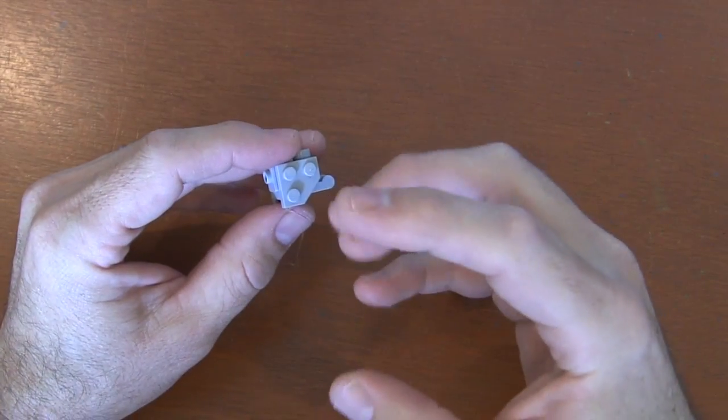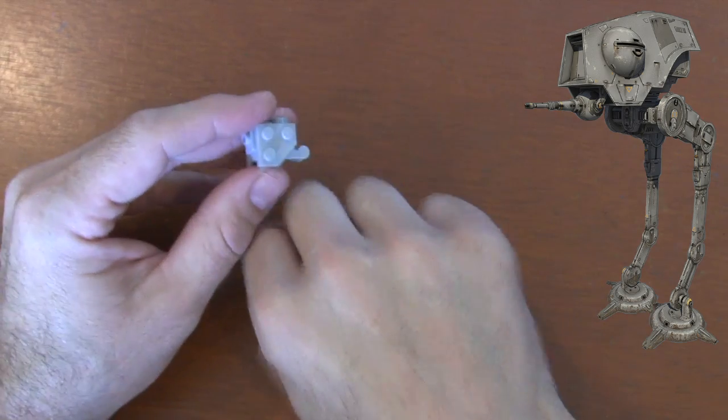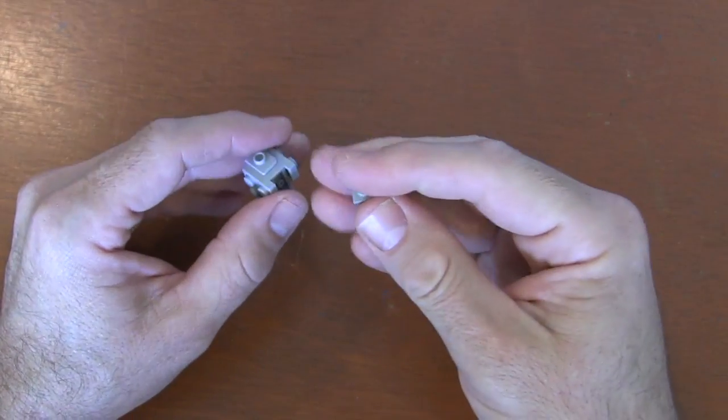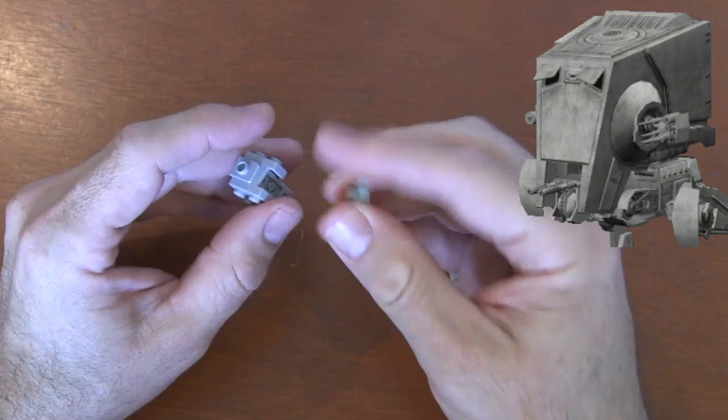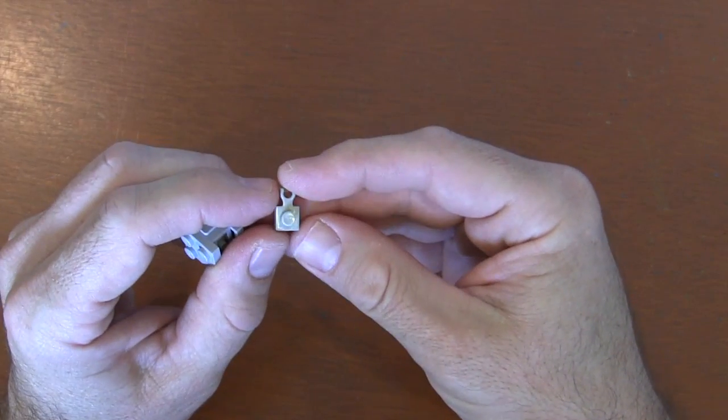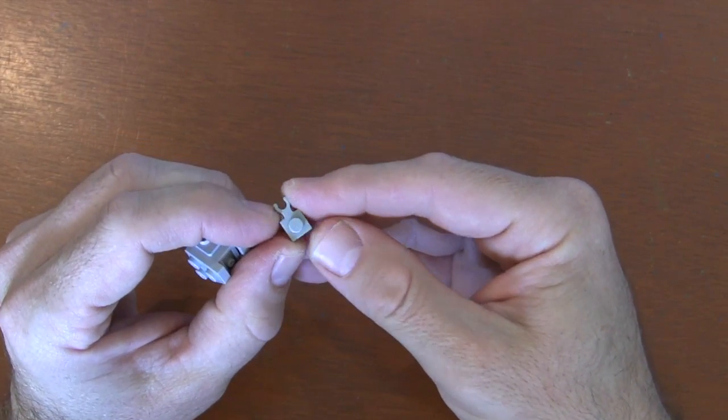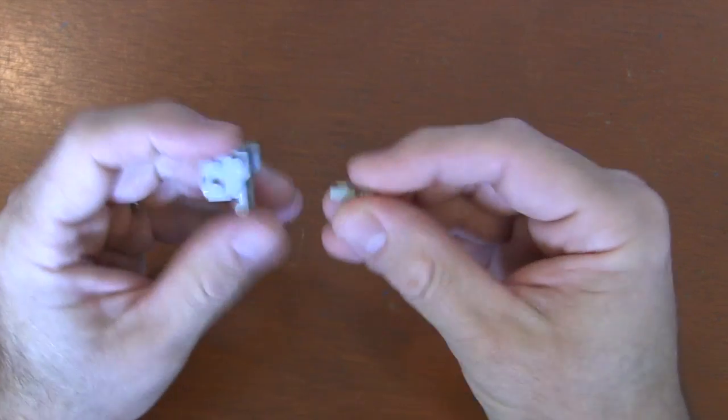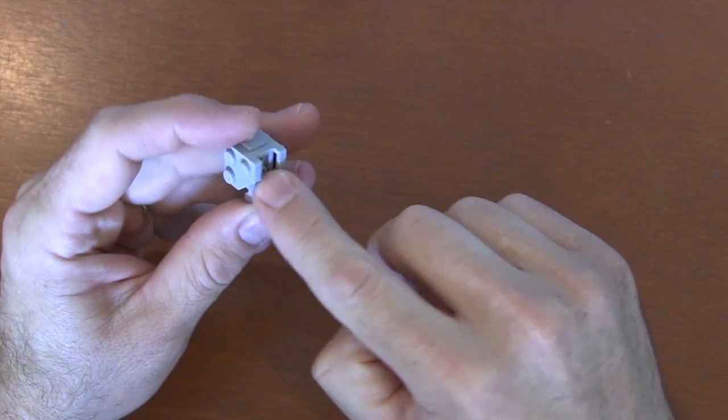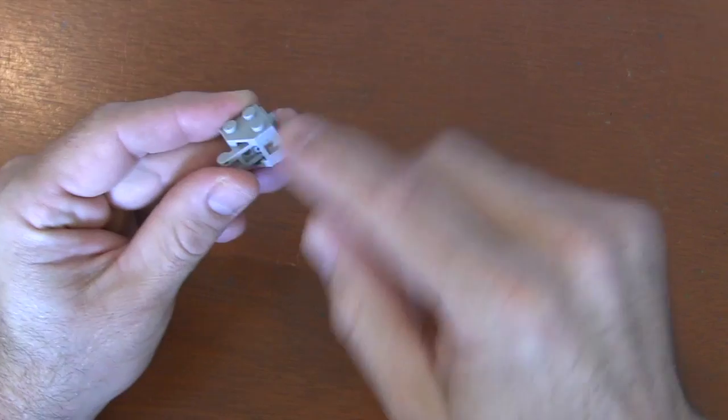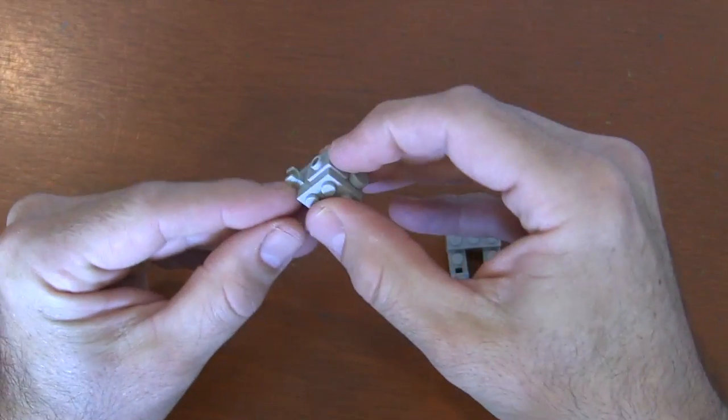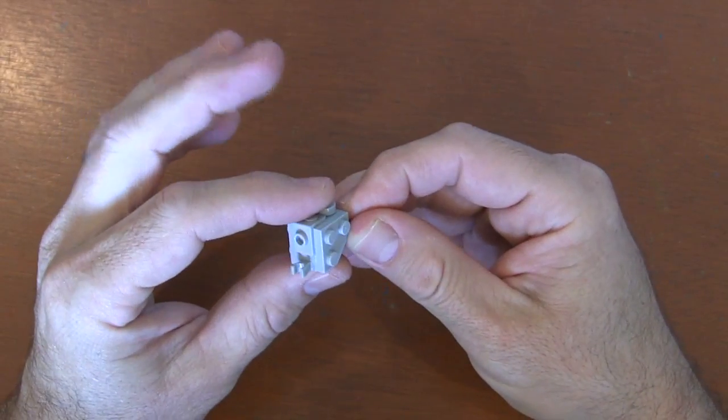Now the big change here - in the LEGO advent calendar, they gave it one cannon, and that is an AT-DP thing. But the AT-ST has two guns underneath. To do that, get a 1x1 plate with vertical clip this time and put it right there underneath in the front. It has a nice flush fit and looks like it's inside. I really like this look.